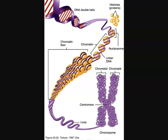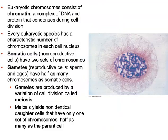Before we get into the stages of cellular division, we have to take a deeper look into chromosomes. Eukaryotic chromosomes consist of chromatin — the complex of DNA and protein that condenses during cell division. This prevents strands from becoming tangled and protects the DNA from physical damage. Every eukaryotic species has a characteristic number of chromosomes in each cell nucleus. Humans have 46 chromosomes, while Drosophila flies have eight chromosomes. Within a species, chromosome number will differ depending on the type of cell.